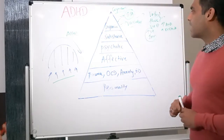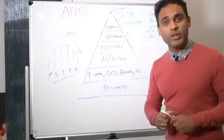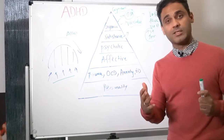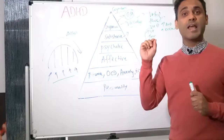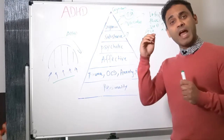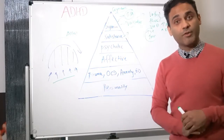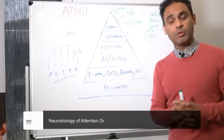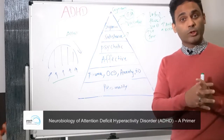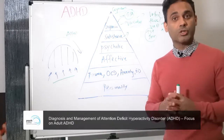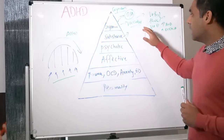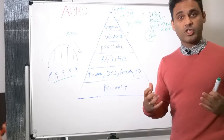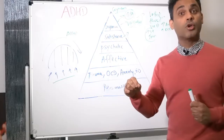Then we think about substances — substance misuse such as excessive alcohol use, cannabis use, or other illicit substances. These substances can impact on the subcortical area, the basal ganglia, and the connections to the frontal lobe — the same pathways involved in ADHD. We've also got to think about any medications prescribed by physicians or psychiatrists, because certain medications can impact on cognition.